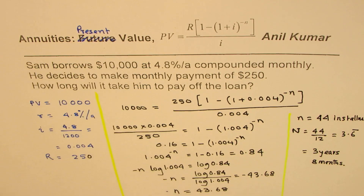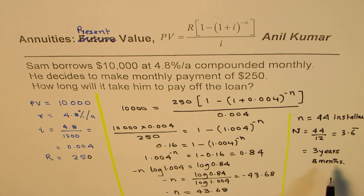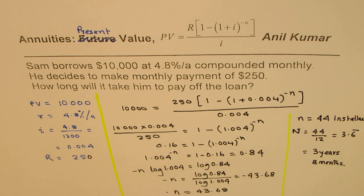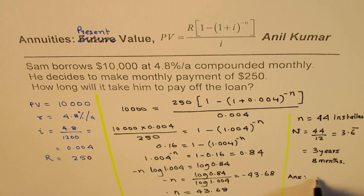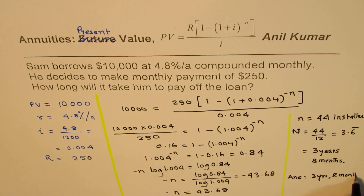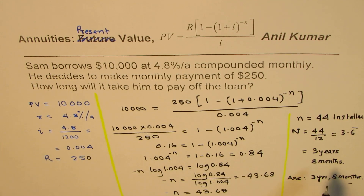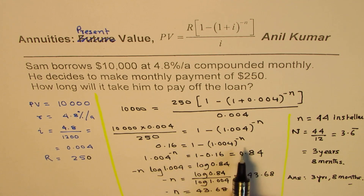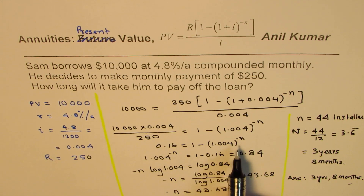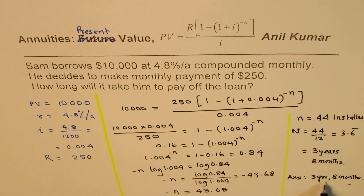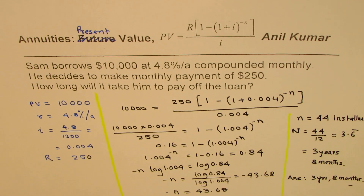The installments will be paid for three years and eight months to pay off the loan. So the answer is three years and eight months. This is a very important question — we applied the logarithm technique to solve for the number of installments, and then converted that to years and months. I'm Anil Kumar and I hope that helps. Please share and subscribe to my videos. Thank you and all the best.